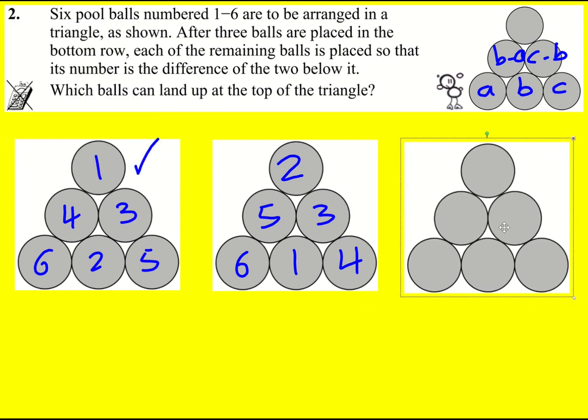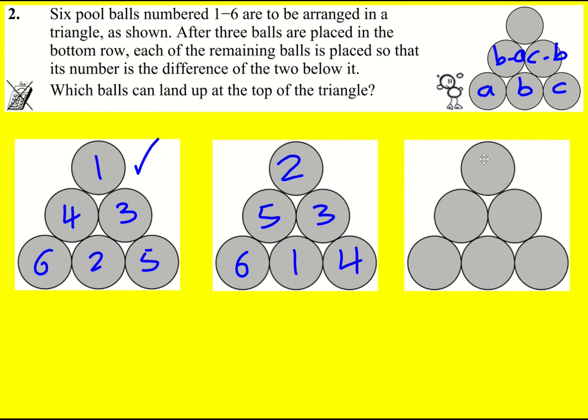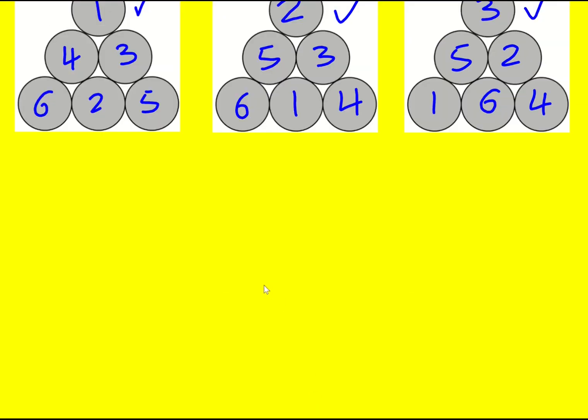And then 3—well, the only way you can get 3 is either 6 and 3, which obviously won't work, or 5 and 2. Then we need to have 6 and 1, with the 6 here, 4 here, and 1 here. So all of these work.